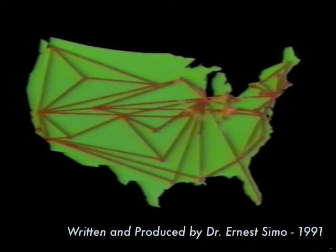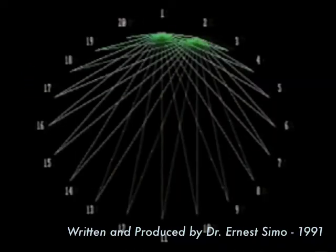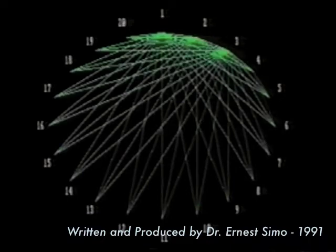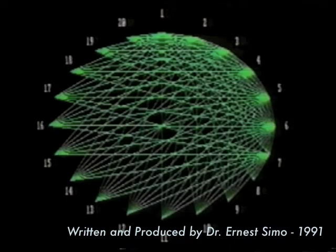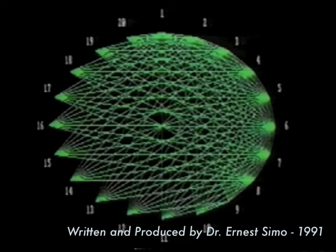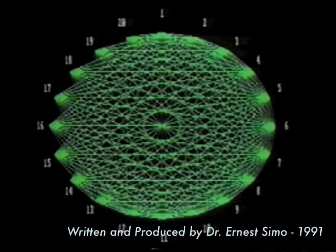The network topology identifies the locations to be interconnected and the network coverage area. This effort also determines the system architecture and the network connectivity. Various options such as the star, mesh, ring, tree, or hybrid topologies are candidate solutions.